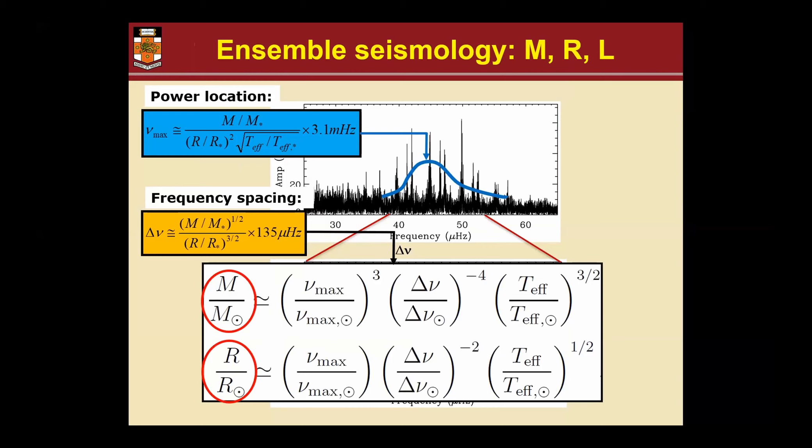Those two quantities give you a luminosity and therefore distance for free. Even in the realm of Gaia now, asteroseismic distances are better than Gaia typically when you are beyond three kiloparsecs, and for what I will talk about today that is very relevant.